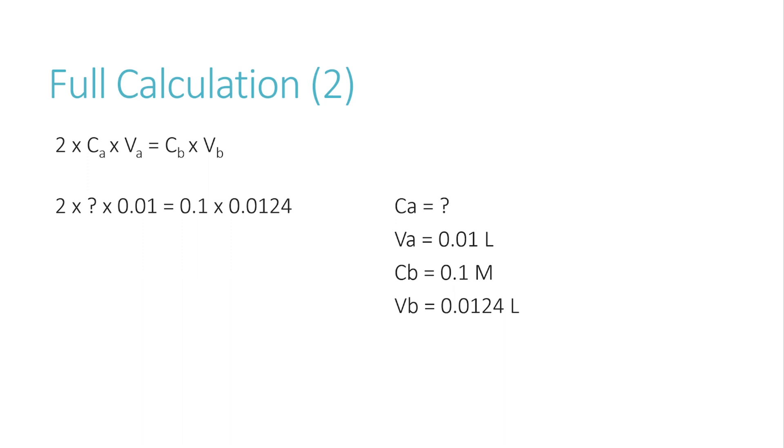So, if we were to carry out this formula, plugging in all of our numbers that we have, we'd have 2 times the concentration of the acid, which is what we don't know, the volume of the acid, which we know, which is the 10 milliliters that we put into the conical flask, is equal to 0.1 molar, which is the sodium hydroxide concentration, times the titer volume, which in our example is 12.4 milliliters.